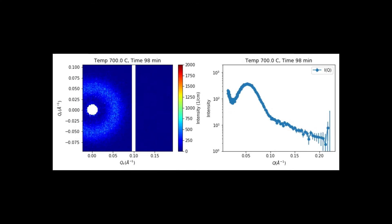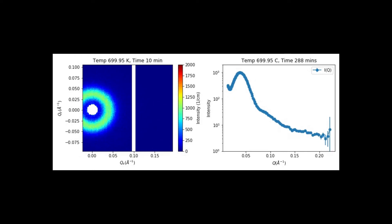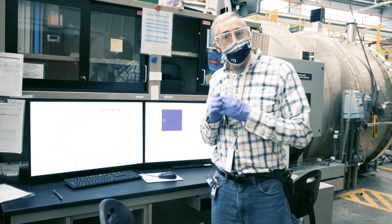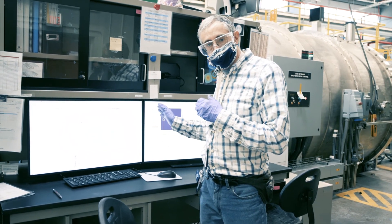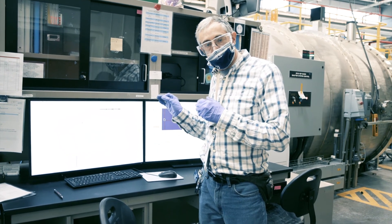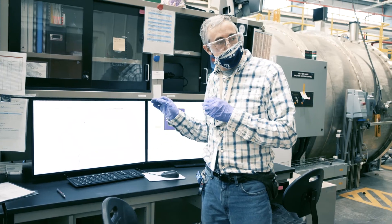What will happen is a ring will appear and then slowly it becomes smaller in diameter as it moves towards the center of the detector. What this means is that as the particles get larger, the angles get smaller. This is only a qualitative assessment — to actually get the accurate size and volume fraction of the precipitates, we will do non-linear least squares fitting into a model after the experiment.